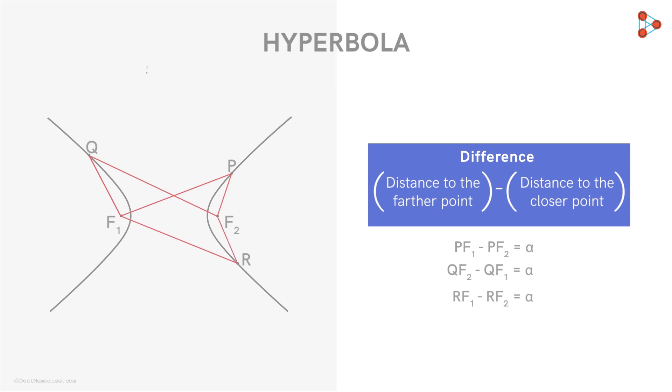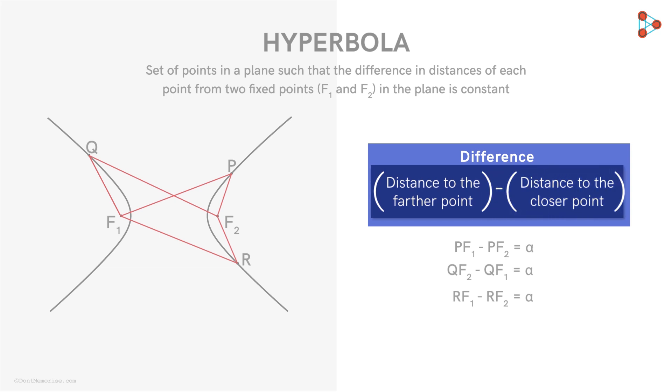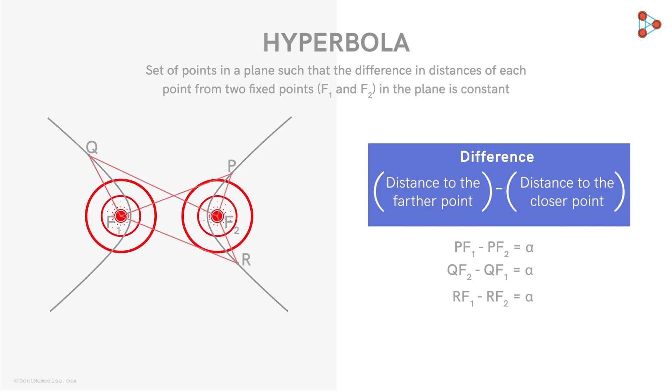So a hyperbola is the set of all points in a plane, the difference of whose distance from two fixed points in the plane is constant. By difference, we mean the distance to the farther point minus the distance to the closer point. These two fixed points together are called the foci of the hyperbola. Notice that unlike any other conic section, a hyperbola is made up of two curves which are mirror images of each other.